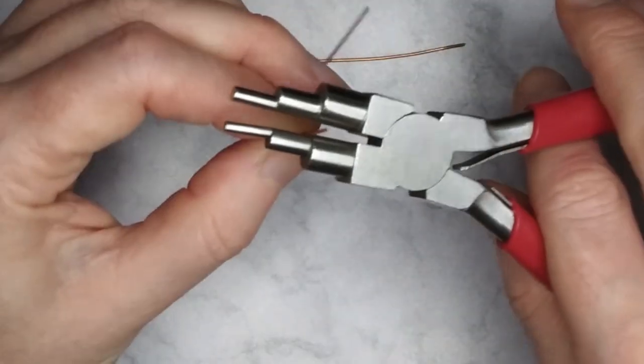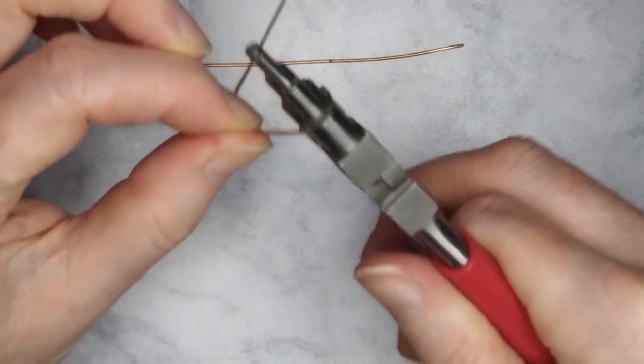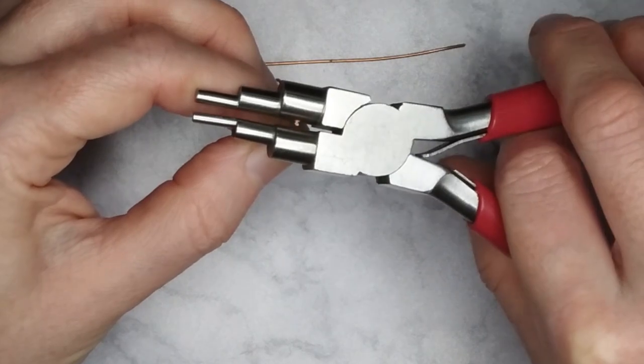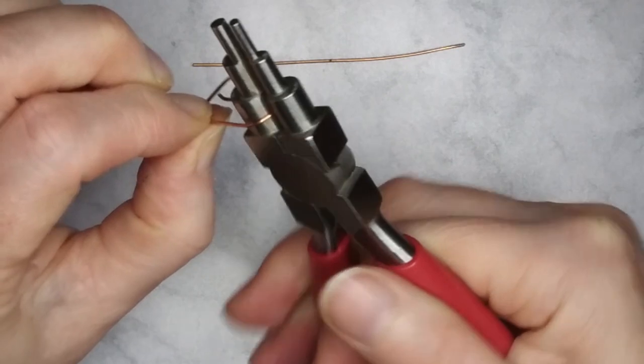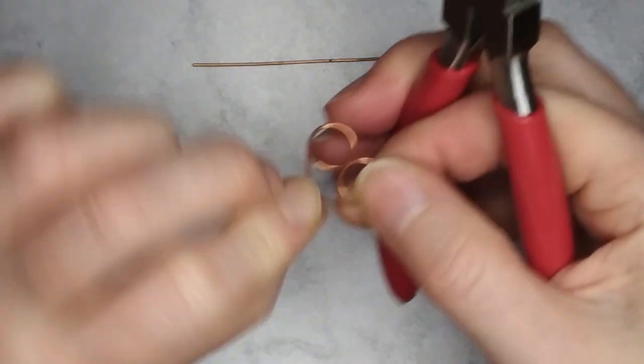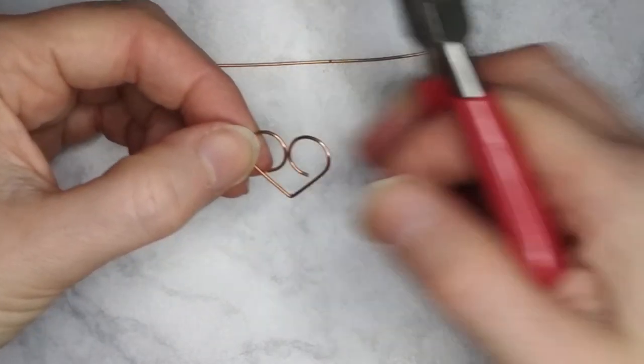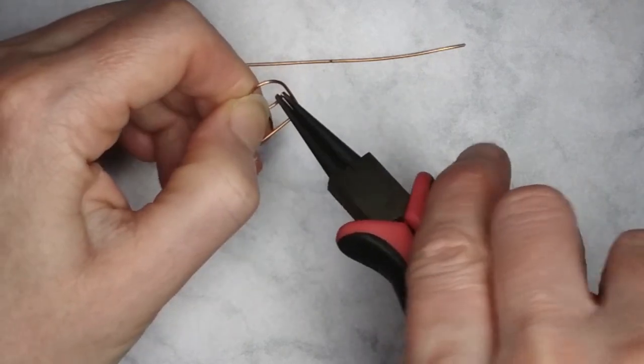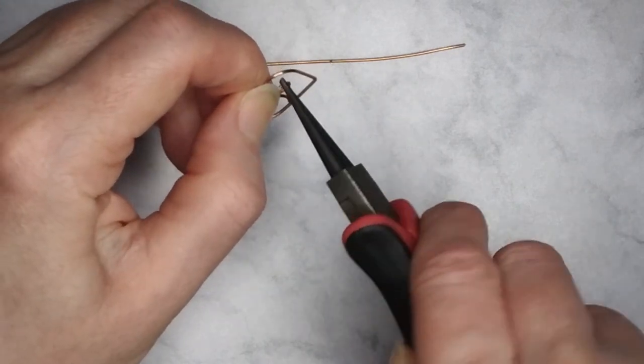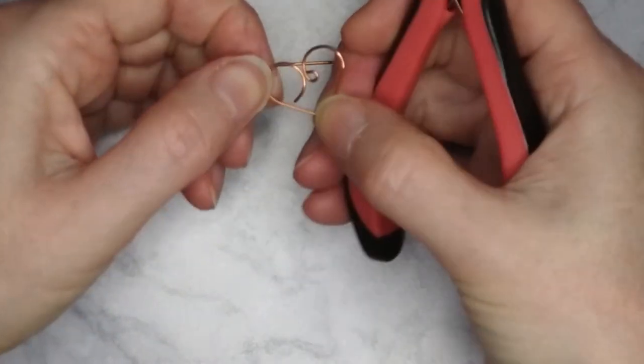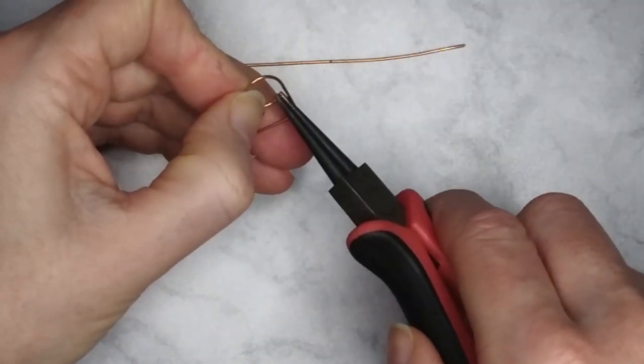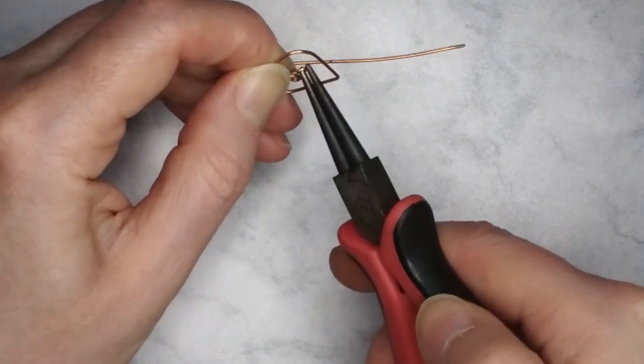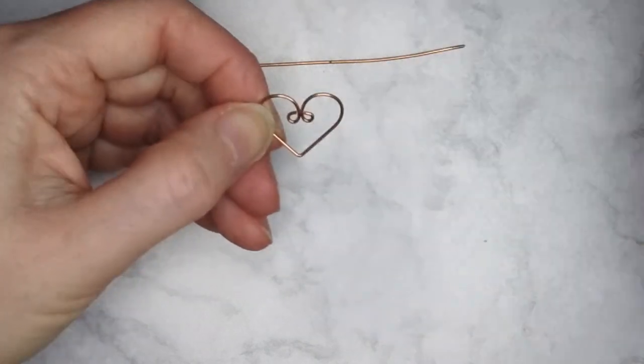I am using the largest setting on my bail making pliers to make loops at both ends of the wire. Use the tip of round nose pliers to curl the end. Make sure the cut ends of the wires are inwards and flush with the rest of the wire.